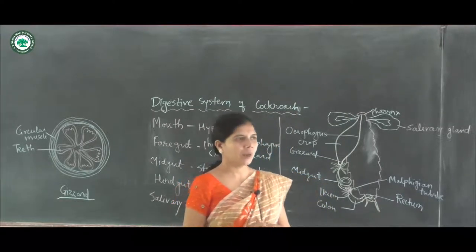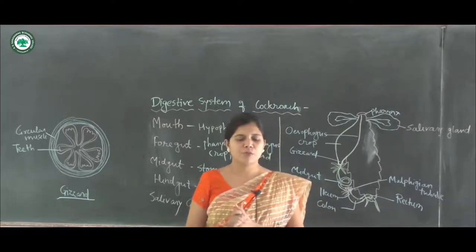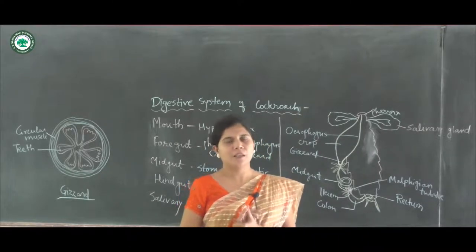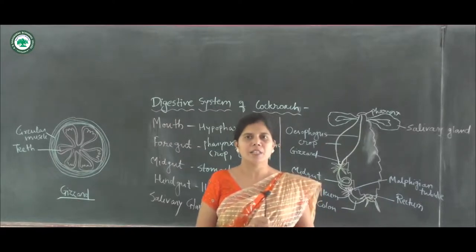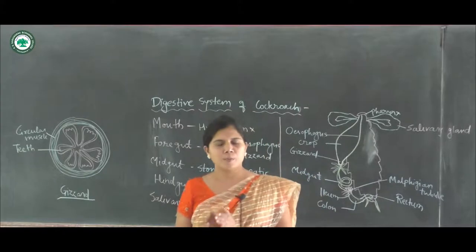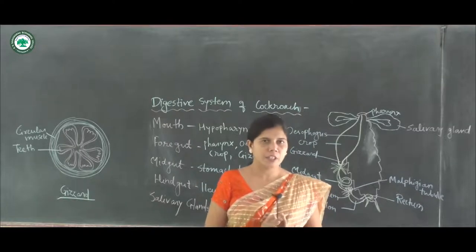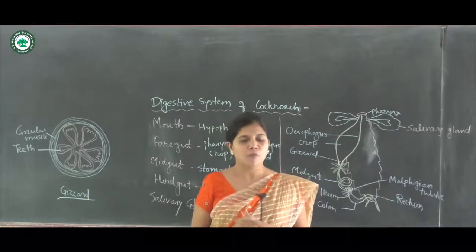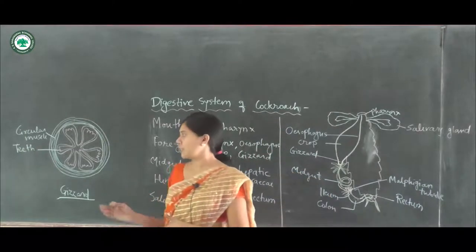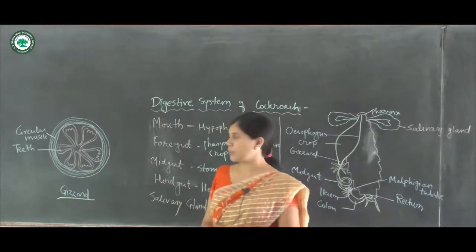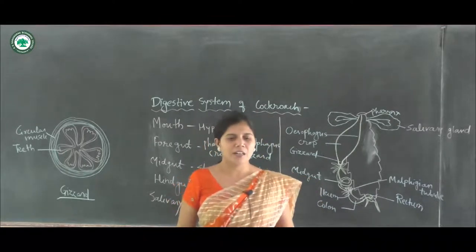The gizzard is a small spherical organ. Internally it is provided with a circle of six chitinous teeth and backwardly directed bristles. The teeth are responsible for crushing the food, and the bristles help in filtering the food. The gizzard also contains circular muscles and longitudinal grooves. The foregut ends with the gizzard.